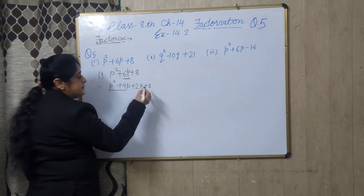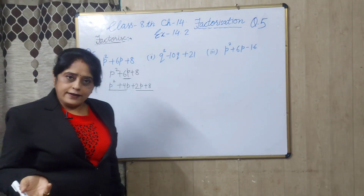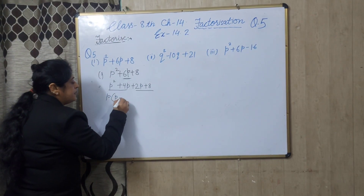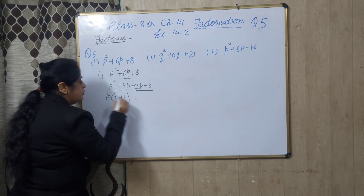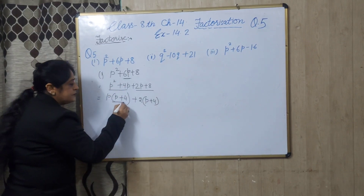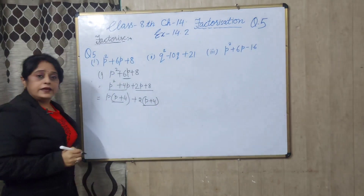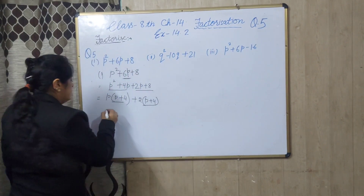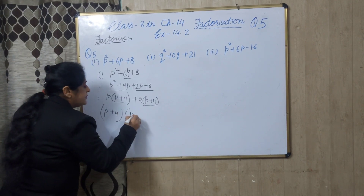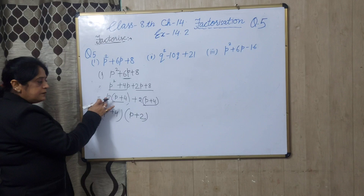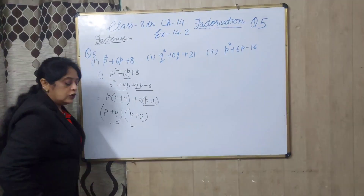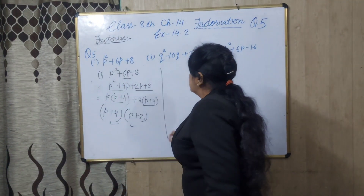Now take these two terms as a pair and these two terms as another pair. Take p as common here, giving p plus 4 inside. And here take 2 as common, giving p plus 4. Now p plus 4 appears in both terms, so take p plus 4 as common outside. Inside you will get p plus 2. So the two factors are p plus 4 and p plus 2.